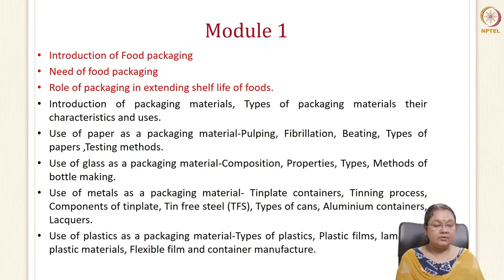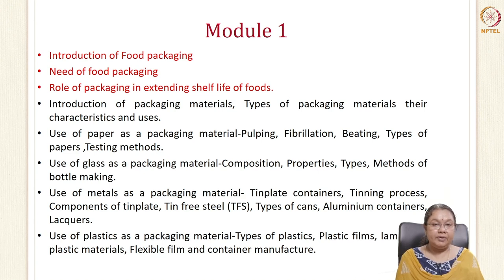In the coming week we will discuss different types of packaging materials, their characteristics and uses, because it is not necessary that the same packaging material has to be used for all kinds of foods. It differs from food to food depending upon the property of the food as well as the packaging material. We will also discuss paper as a packaging material, from the raw material — the wood — how it can be converted to a packaging material, the different types of papers developed, their applications in food industry, and how to test the properties of different papers.